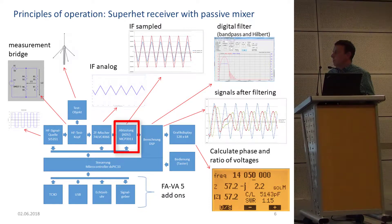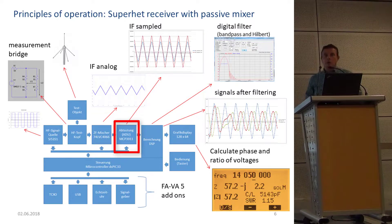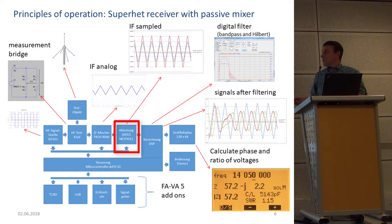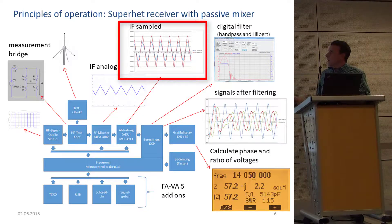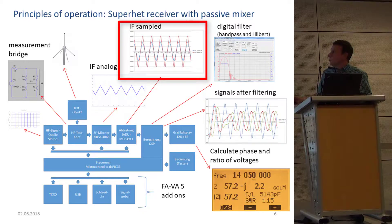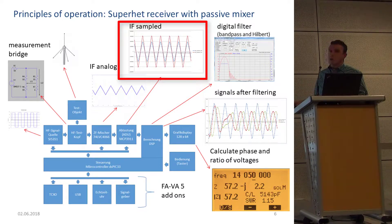Then we do analog-to-digital conversion. A very unusual component is used here: the MCP3911 from Microchip. It's a 24-bit ADC — very accurate, with high oversampling — designed for energy measurement. Energy measurement is a mass market, so it's quite cheap. We arrive at an intermediate frequency signal, and these samples are taken directly from memory — they are real. We can see two triangles: the red curve is the first voltage, the blue curve is the second voltage. There is no phase difference here because Z was exactly 50 ohms, purely resistive — so no phase difference between the two voltages.